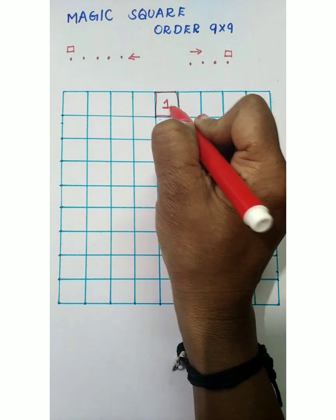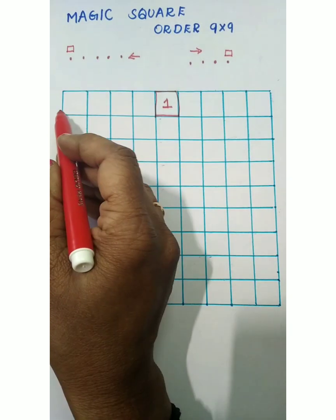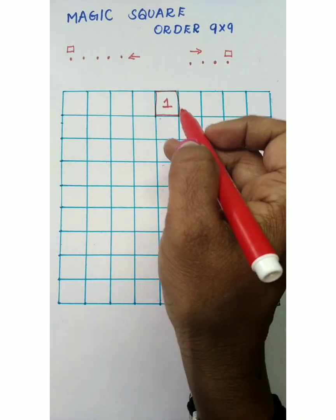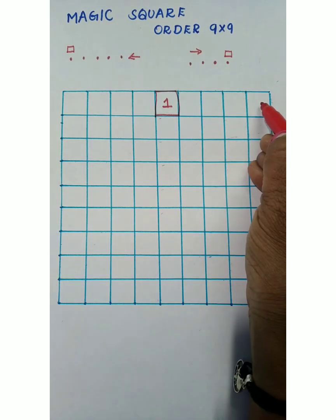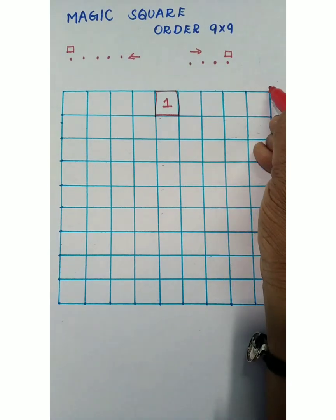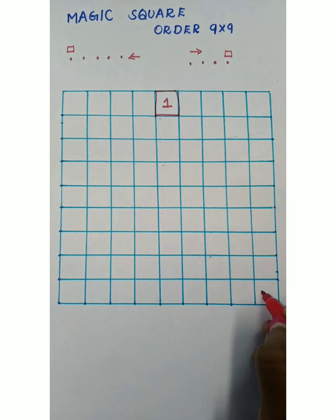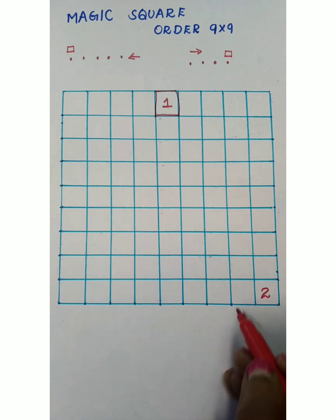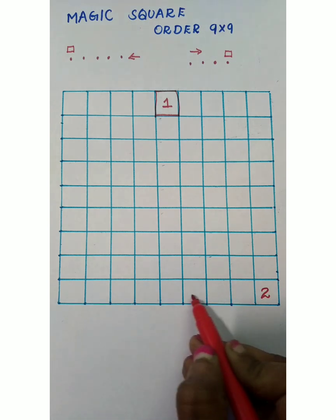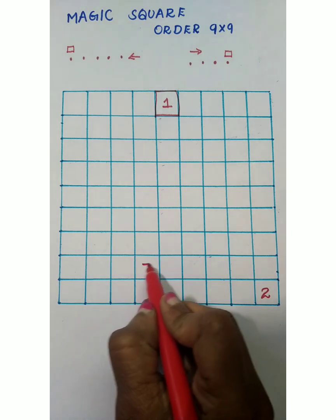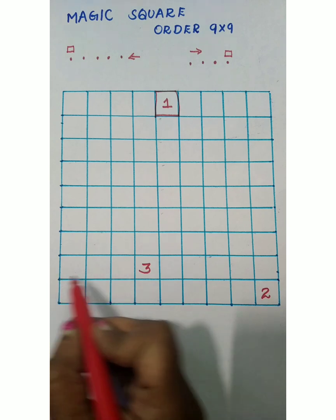The first digit is 1. Move right four boxes: one, two, three, four — place digit 1 here, but there is no box, so go to the column end and place it. Move right for digit 2; no box on the right side, so move towards the left five steps: one, two, three, four, five — select the top box and place digit 3.